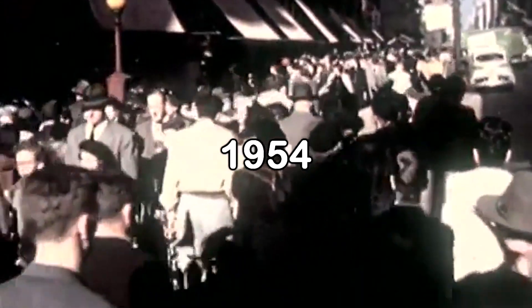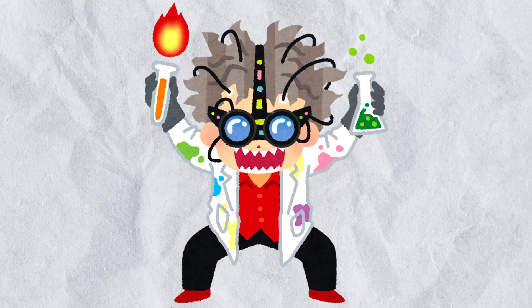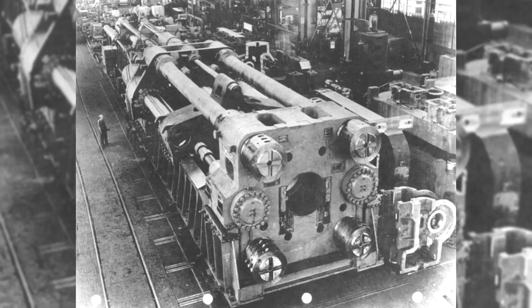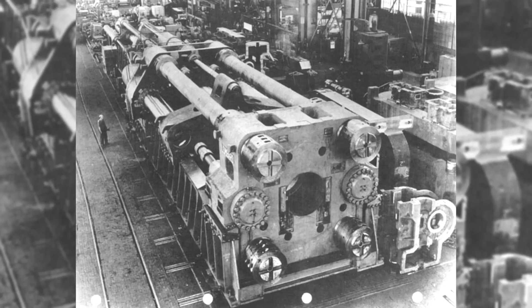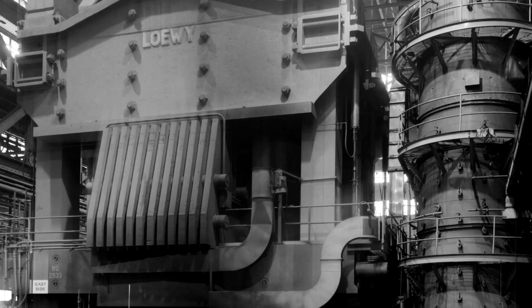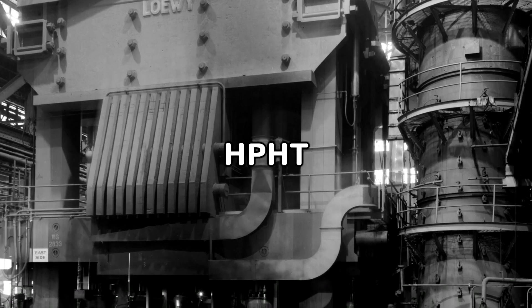In 1954, some general electric researchers thought about mimicking the natural process to make diamonds. They used a massive hydraulic press that could generate extreme pressures and temperatures, a method known as high-pressure, high-temperature process.